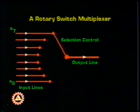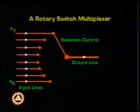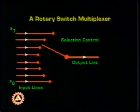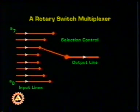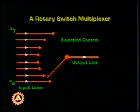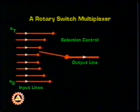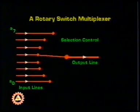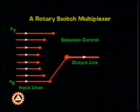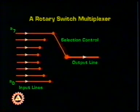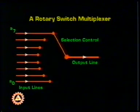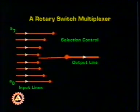In a multiplexer we first encounter the concept of control. The multiplexer is like a multi-position switch where data from only one of the input lines passes to the output. The selector arm of the input line is controlled by the selector or control input.